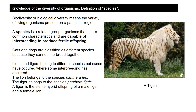We need to understand basically two words: diversity and species. Biodiversity is the variety of life that exists. A species is a group of organisms that have something in common, but most importantly they can interbreed with each other and produce fertile offspring, so that the young they produce will themselves be capable of reproduction.